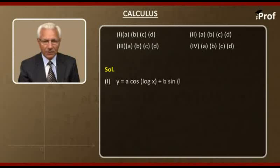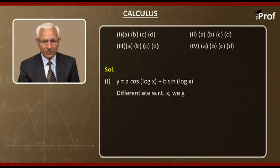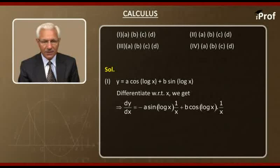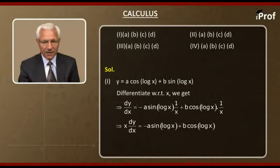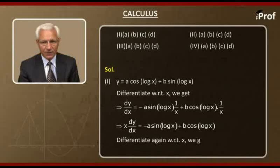Now the first question: y = a·cos(log x) + b·sin(log x). Differentiating with respect to x, we get dy/dx = minus a·sin(log x) times (1/x) plus b·cos(log x) times (1/x). Multiplying by x, we get x·dy/dx = minus a·sin(log x) plus b·cos(log x).